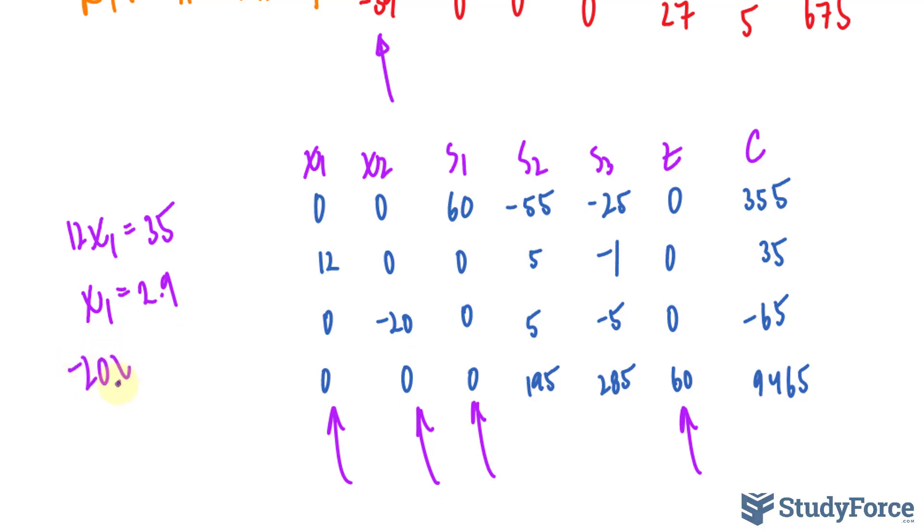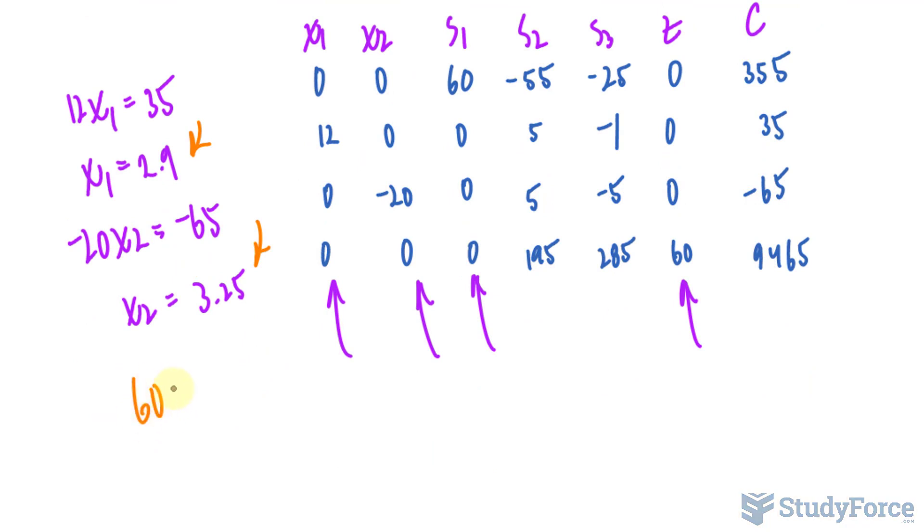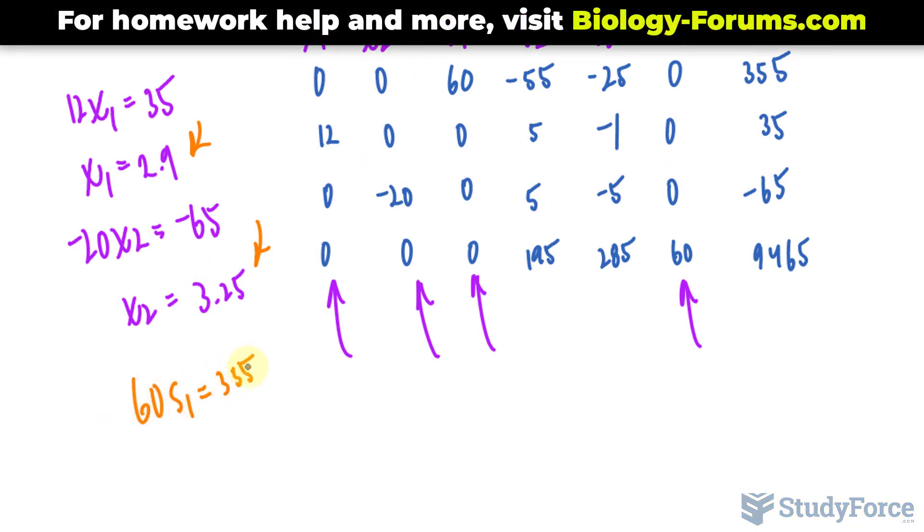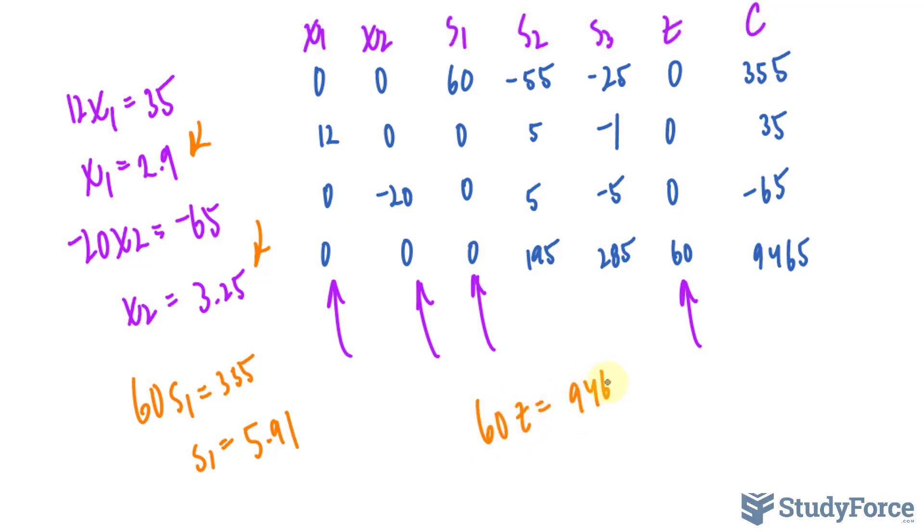For this column, we have -20x₂ equals -65. If we solve for x₂, we end up with 3.25. Remember, this is one of our solutions, this is the other solution. Solving for s₁, we have s₁ equals 5.91. And the most important part of all, z: 60 times z equals 9465. Dividing both sides by 60 gives us 157.75. Therefore, our minimum is 157.75, and that happens when x₁ is 2.9 and when x₂ is 3.25.